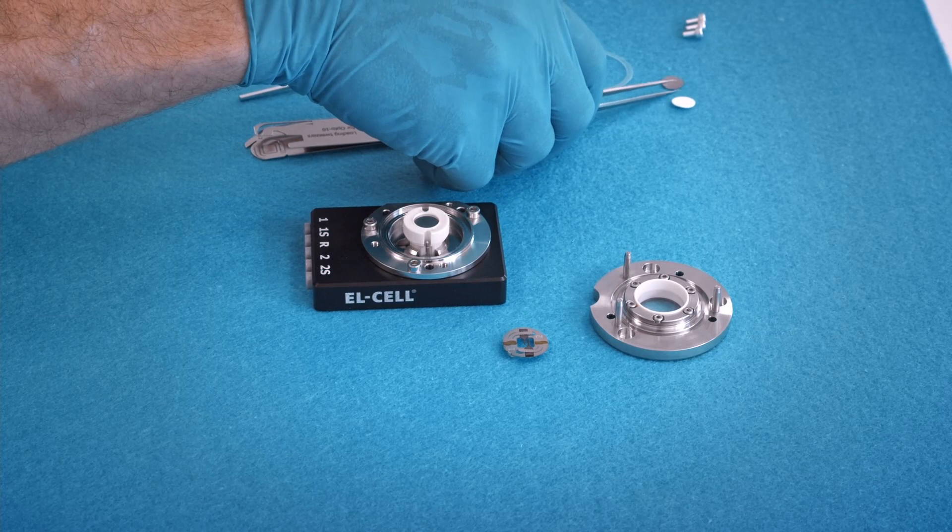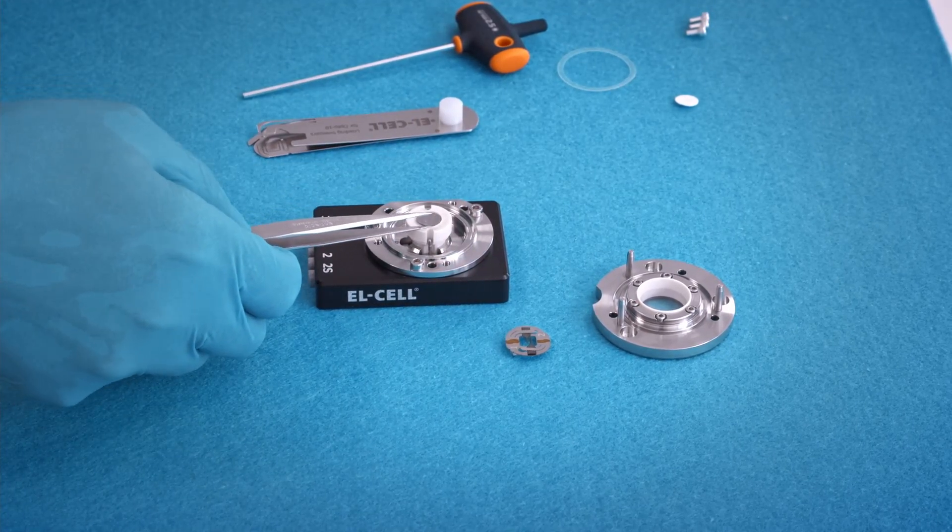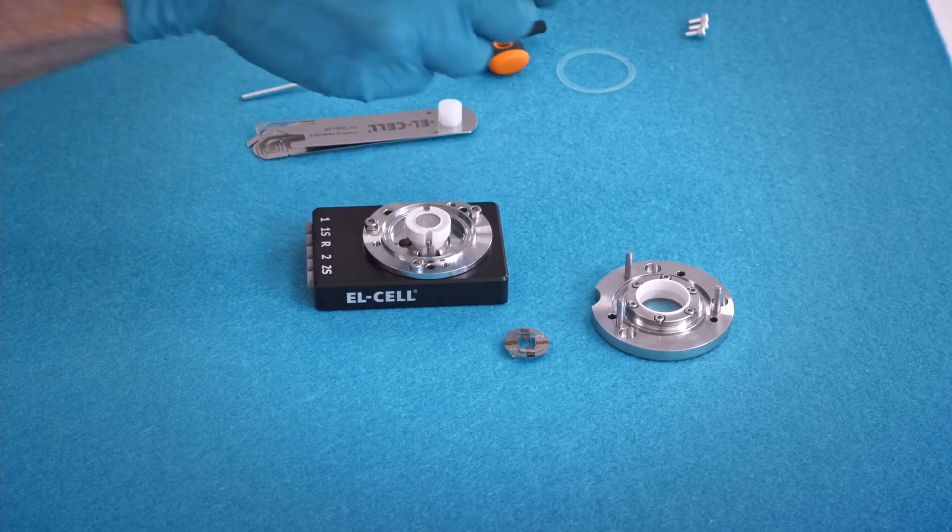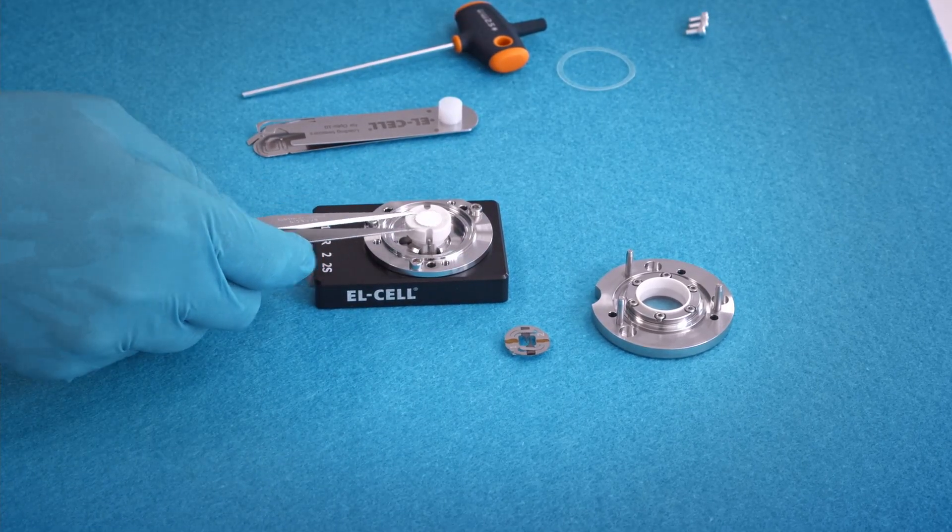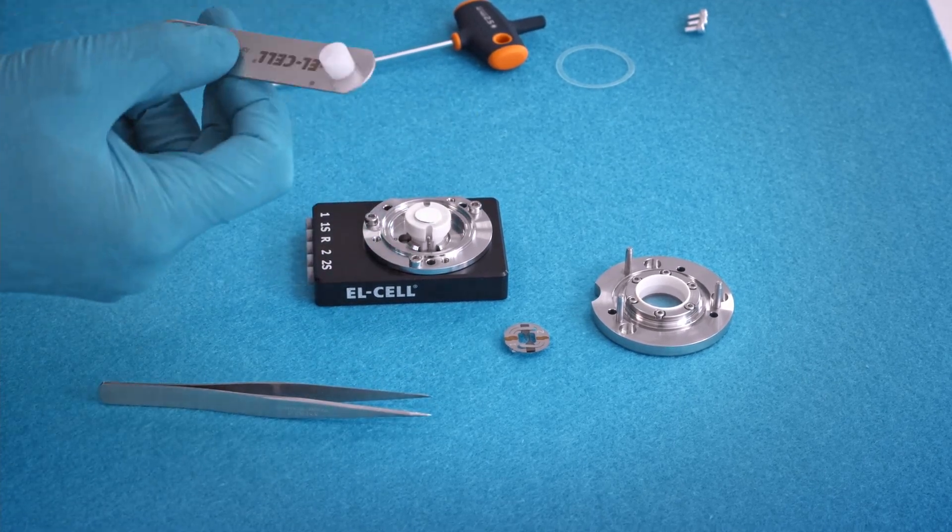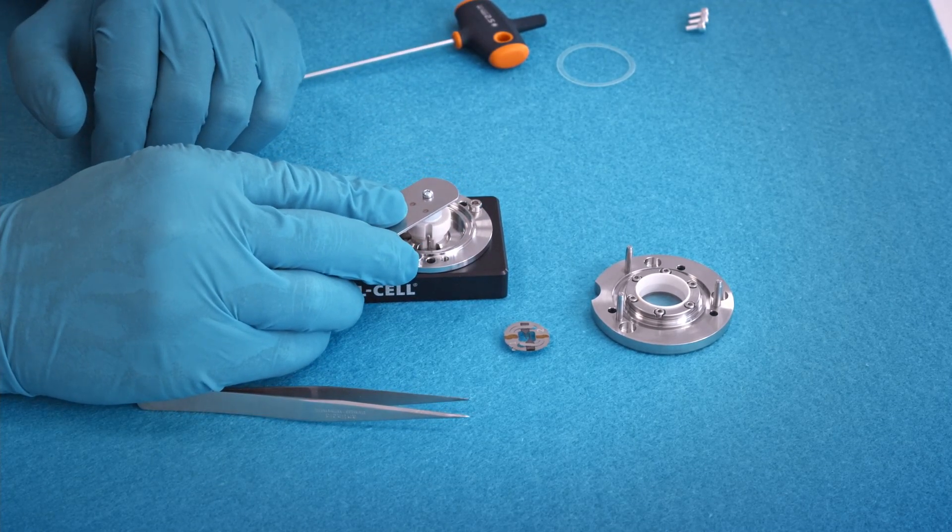Next we put in the lithium metal onto the central plunger. Put the glass fiber separator 10 mm diameter on top. The glass fiber disc can also be smaller to prevent that the sample holder is in contact with the electrolyte.